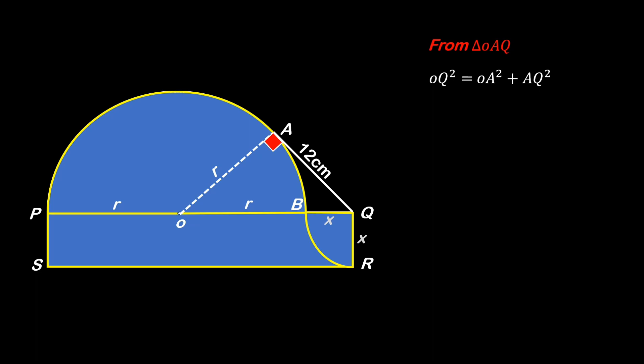Now OQ is actually r + x, so writing it as (r + x)². OB is r and BQ is x, while OA is r and AQ is 12 units. So writing this all and expanding the left side.